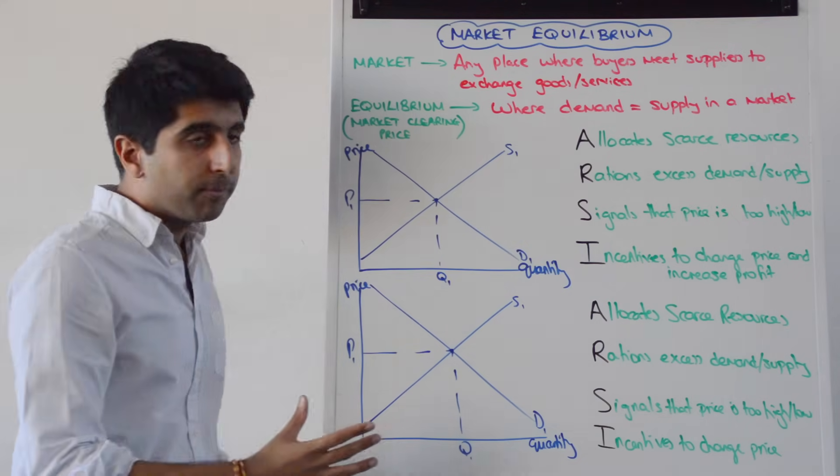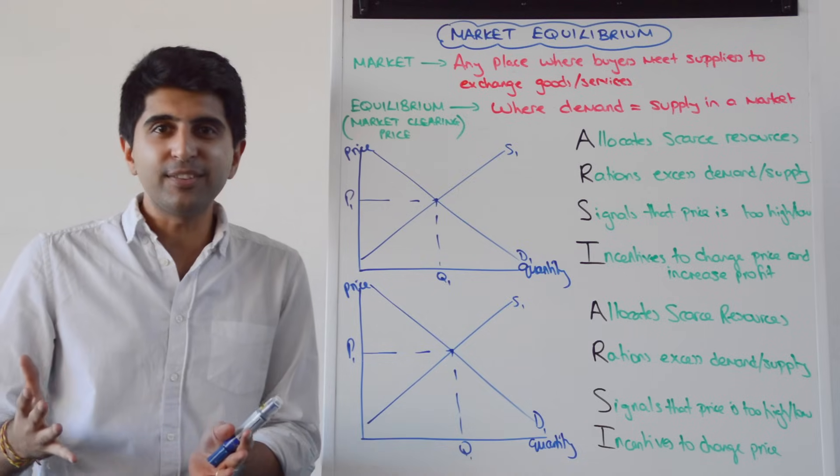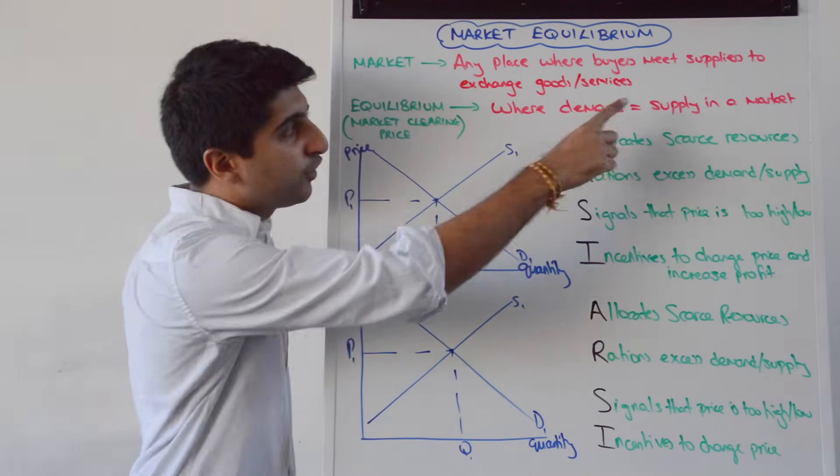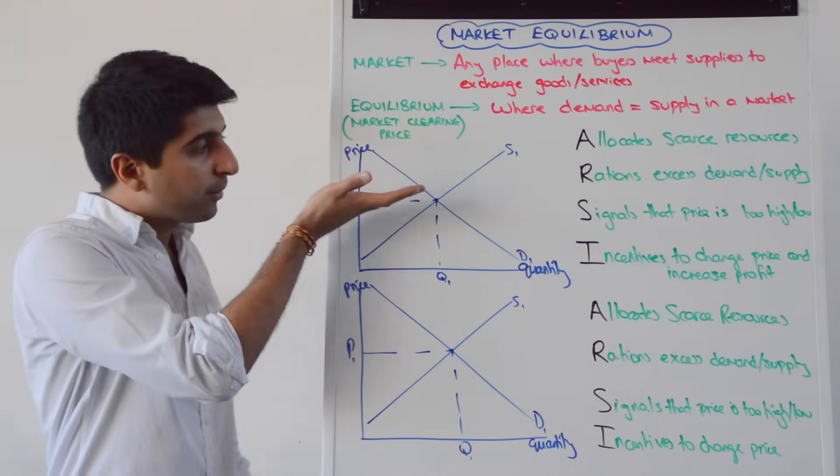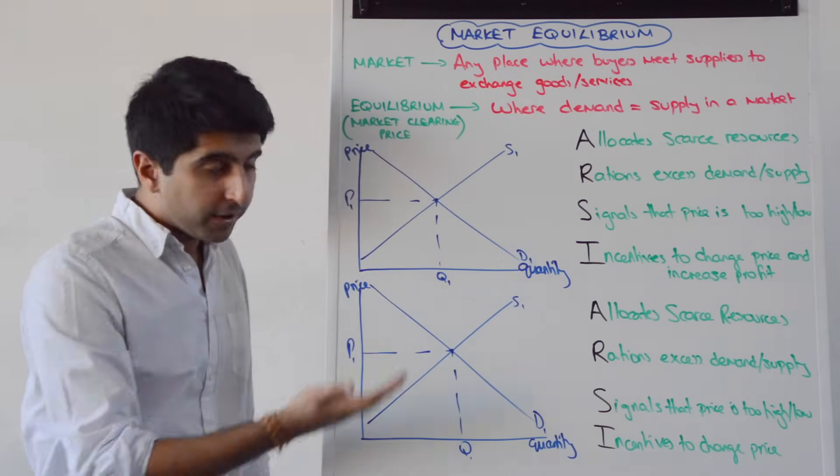So that's what equilibrium looks like. What does disequilibrium look like? Well clearly disequilibrium will be where demand does not equal supply. Maybe the price is above P1, maybe the price is below P1.